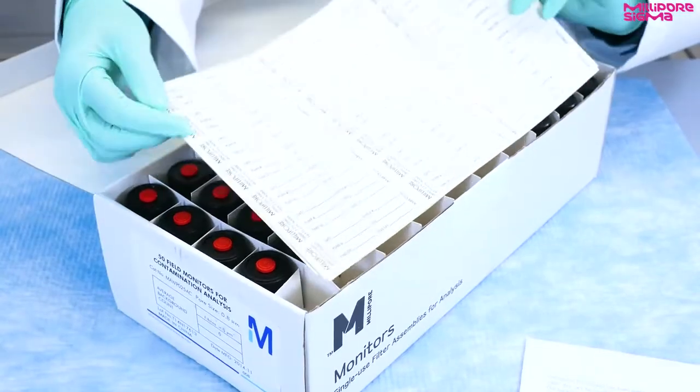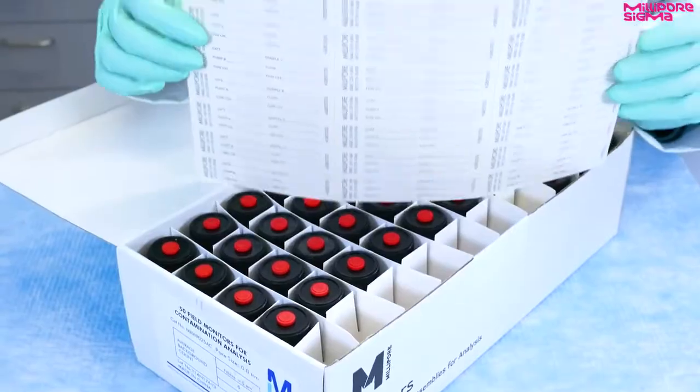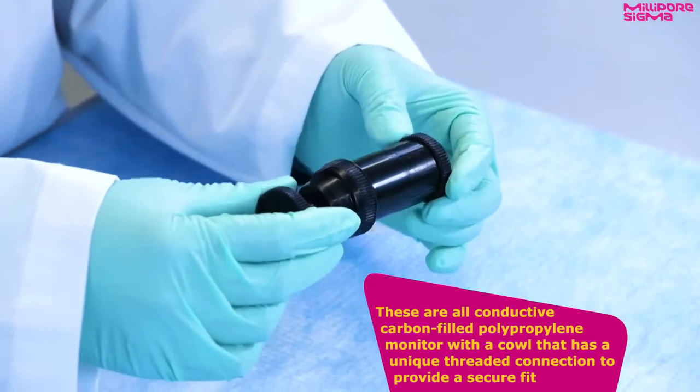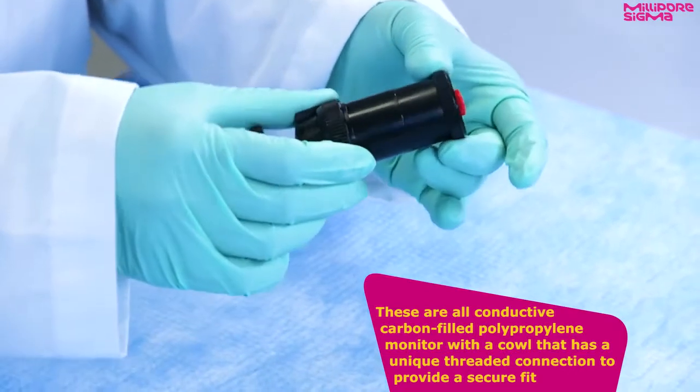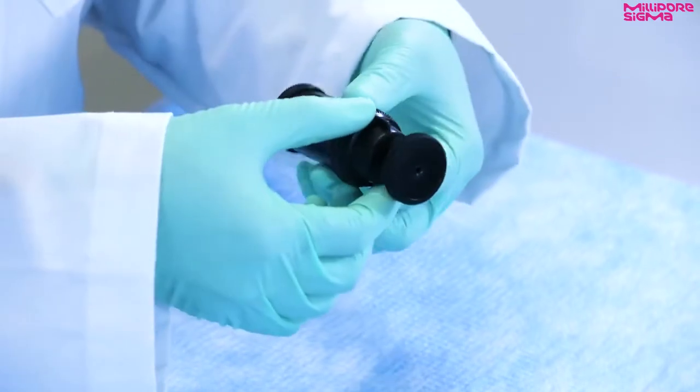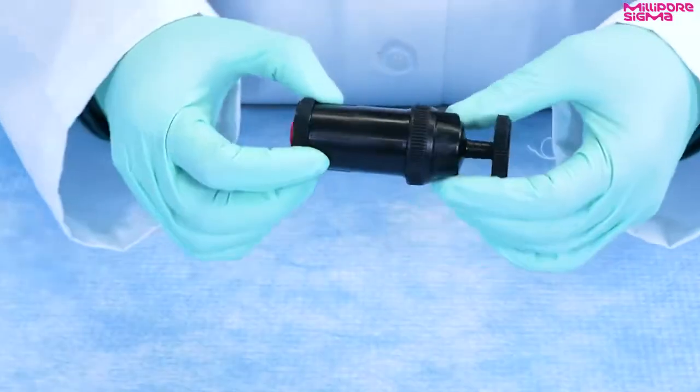Each box contains pre-printed labels for each cassette. These are all conductive carbon-filled polypropylene monitors. Each monitor has a cowl with a unique threaded connection to provide a secure fit. These monitors minimize static electricity and help ensure uniform particle or fiber distribution.